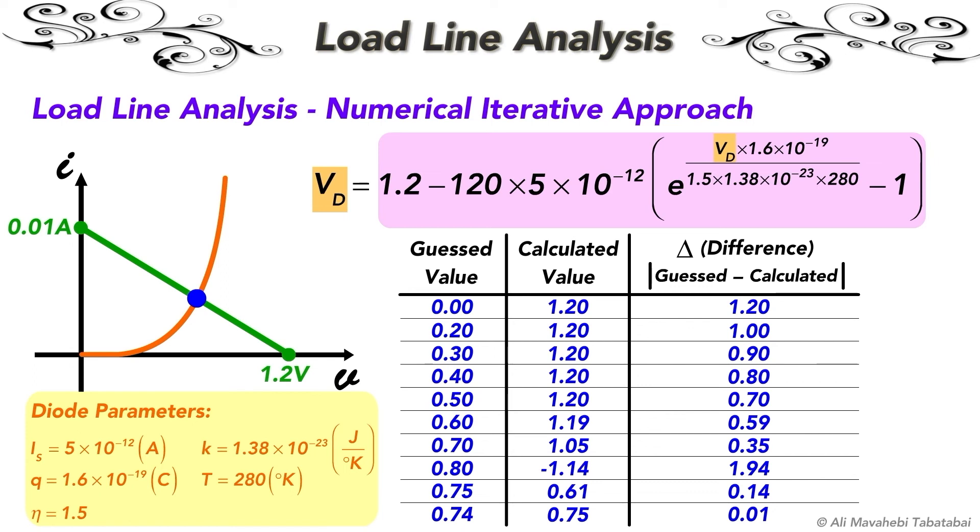In this example, you can see that the diode voltage of 0.74 is a very good approximation for the diode voltage. I could repeat this process so that the error would become zero, but 0.74 volts is very close to the real voltage.